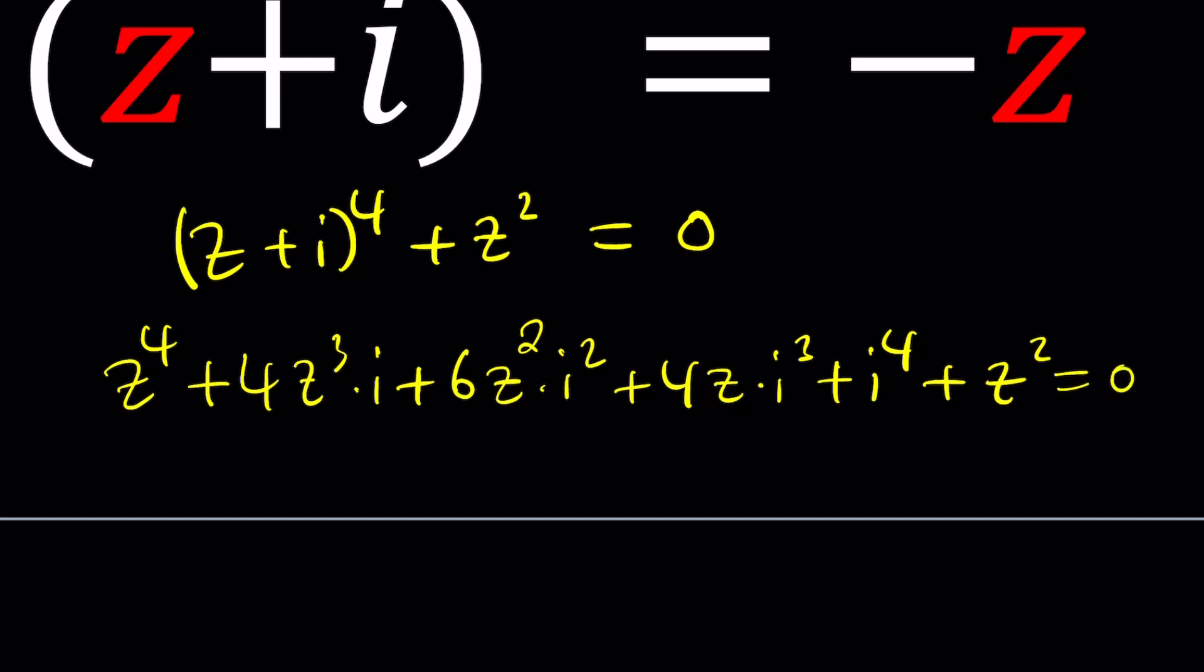Now let's go ahead and simplify the powers of I here. For example, this is Z to the fourth. And as you know, I squared is negative one. I to the fourth is just one. And I cubed is the same as negative I.